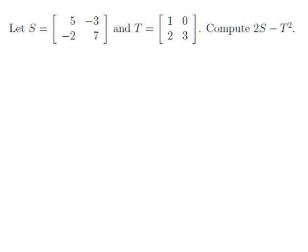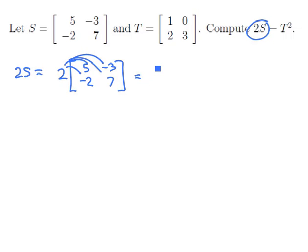Let's start off by working out this in pieces. Let's begin with 2S. So 2S just means to take the matrix S, which is [5, -3; -2, 7], and scale it by the value 2. Just like a vector, we're going to scale it term by term. This is going to give us the matrix [10, -6; -4, 14]. And so that's 2S.